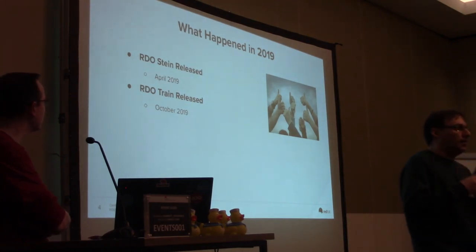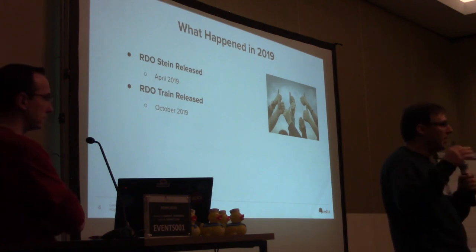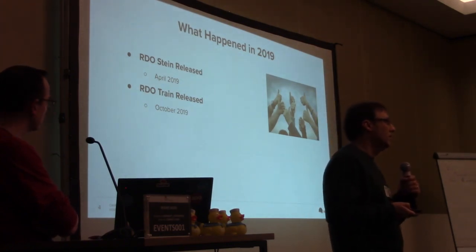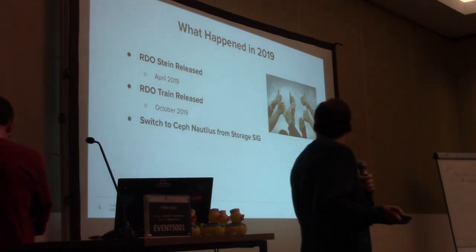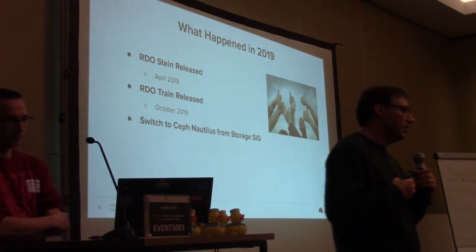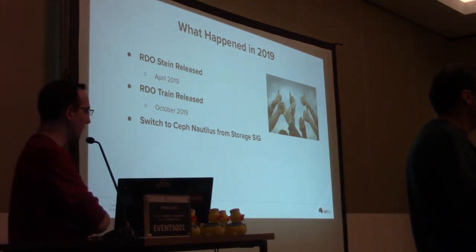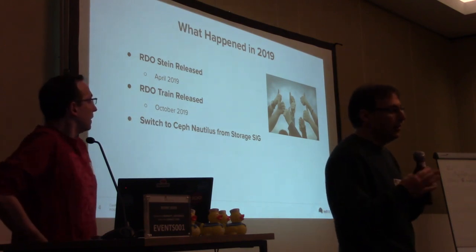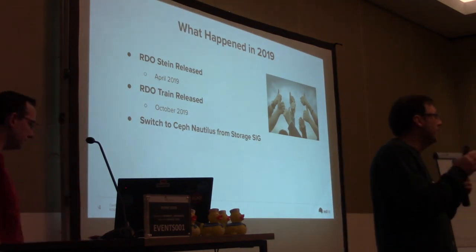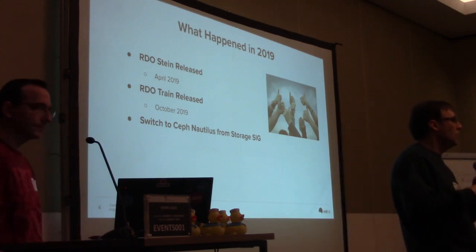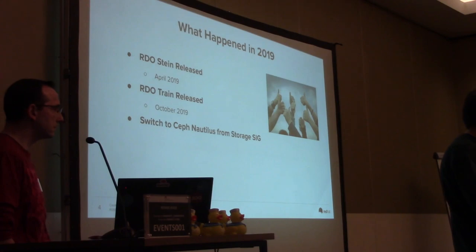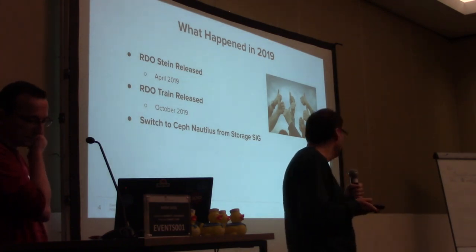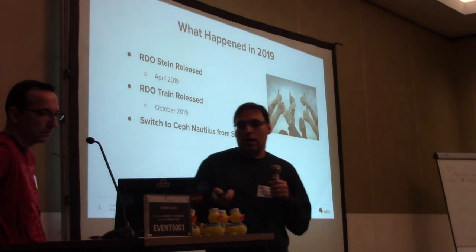At RDO we try to provide packages for upstream releases as soon as possible after they are tagged upstream. Usually it means about days, though in some cases it took us a little bit more. One of the big things we did in the last year was to move by default to use Ceph Nautilus, the latest version, as default in OpenStack. There is a very close relationship between OpenStack and other projects like Ceph, so we tried to synchronize with new releases of Ceph. This year we moved to Nautilus since Stein, which has been a good achievement.